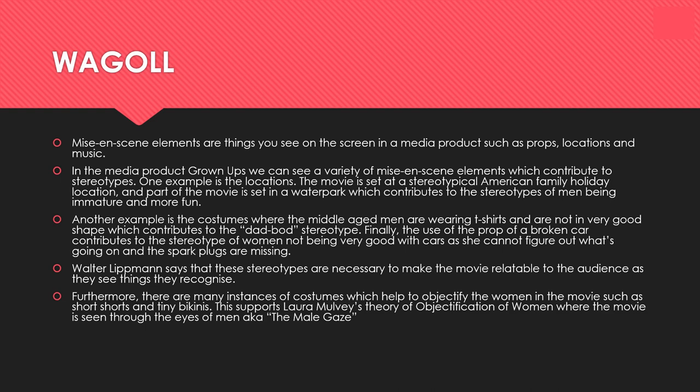Here's an example of a straightforward achievable answer. The introduction paragraph picks something out of the question and explains what it is. Then start giving your examples, or put your theories in first — it's up to you. Mention the product you're studying, mention specific mise-en-scene elements and how they contributed to the stereotype. Then add in your theories: Walter Lippmann says why we need stereotypes in the first place, and you could also put Laura Mulvey's objectification in there as well.